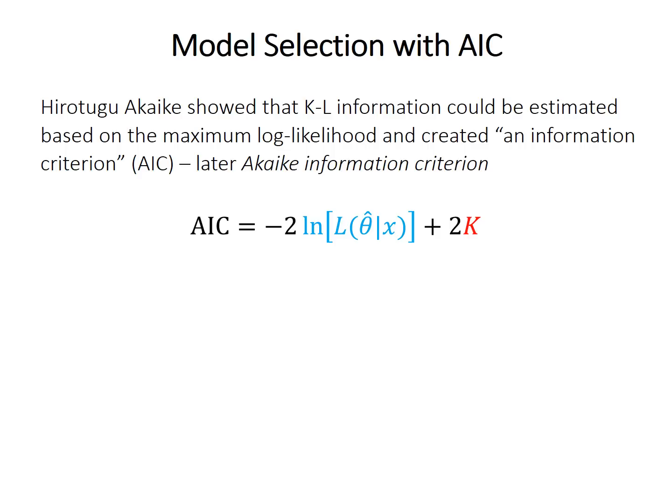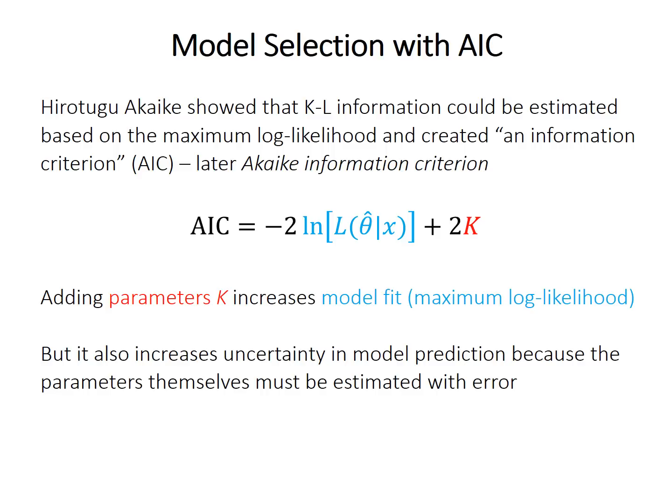So the K term then is often said to penalize more complex models, that is, models that have more parameters. So adding more parameters always increases the model fit and always gives you a higher log likelihood. However, more parameters also increase the uncertainty in the model prediction, for example. Because each parameter must itself be estimated from the data. And so therefore there's some error on each estimate, and if you're making lots of estimates, you end up with lots more error on the overall fit of the model.